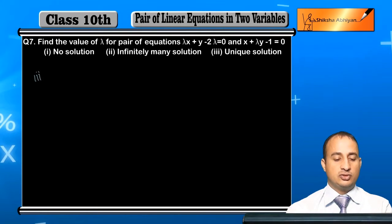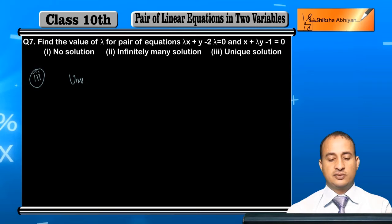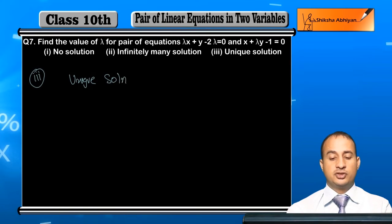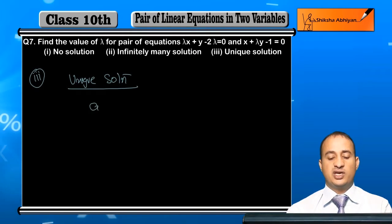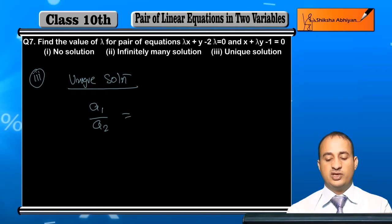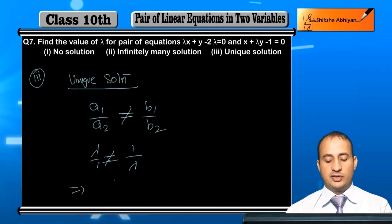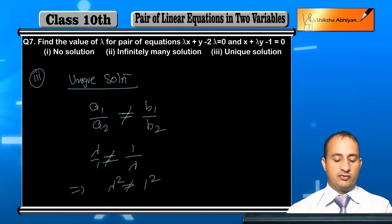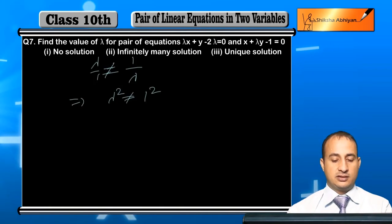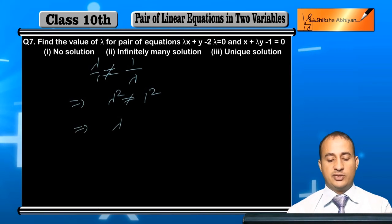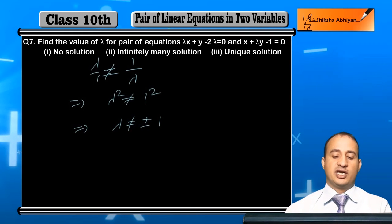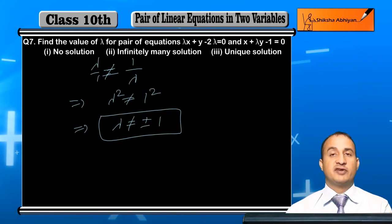For the third case — unique solution — the condition is a1 upon a2 is not equal to b1 upon b2. That is, lambda by 1 is not equal to 1 by lambda. This implies lambda squared is not equal to 1, and therefore lambda is not equal to plus or minus 1.